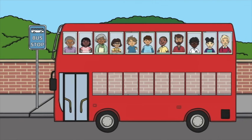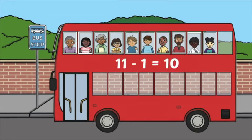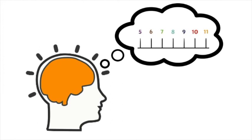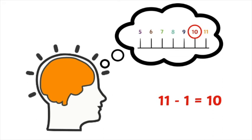First there were eleven passengers on the bus. Then one passenger hopped off. Now how many passengers are there? Ten. Eleven take away one equals ten. Imagine a number line starting at eleven and count back one. Eleven minus one equals ten.